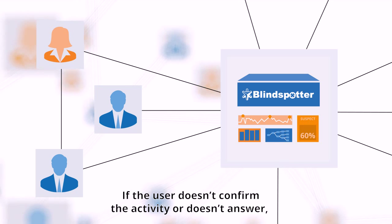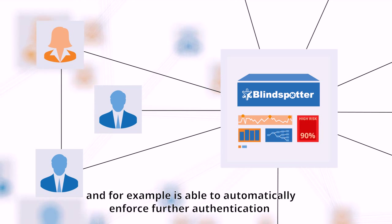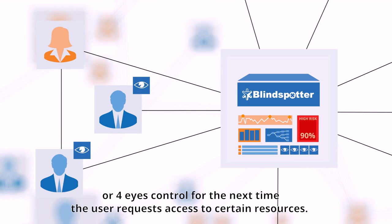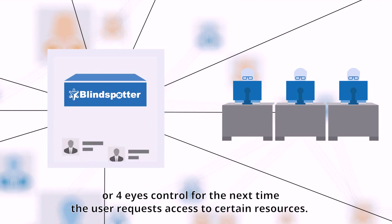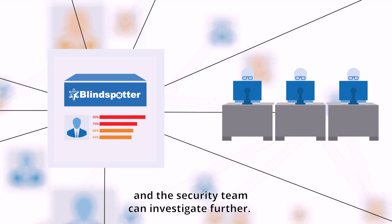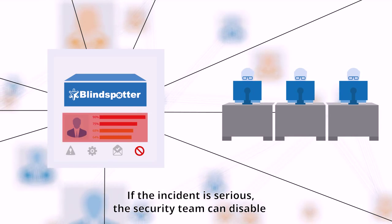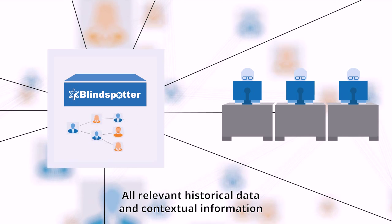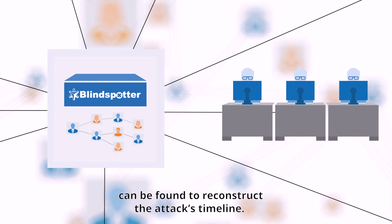If the user doesn't confirm the activity or doesn't answer, Blindspotter increases the risk level again and is able to automatically enforce further authentication or four-eyes control for the next time the user requests access to certain resources. The incident is also highlighted on Blindspotter's dashboard, and the security team can investigate further. If the incident is serious, the security team can disable the user's account through Blindspotter immediately. All relevant historical data and contextual information can be found to reconstruct the attack's timeline.